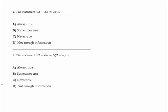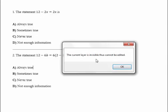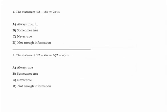So let's go really quickly and take a look at these two statements. The statement 12 minus 2x equals 2x. Well, we have our choices. Is it always true? Is it sometimes true? Is it never true? Or is there not enough information? Well, in this case, we could solve it. Let's get x all on one side.